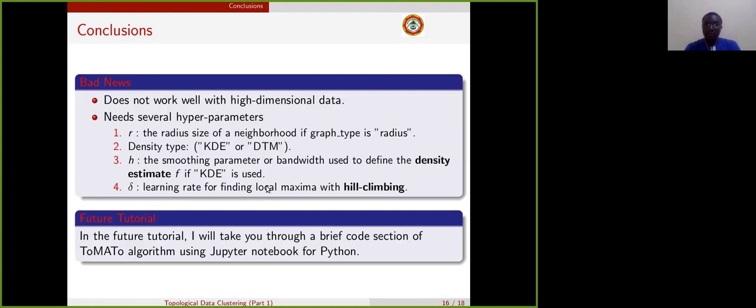So in conclusion, we can say that tomato is a very nice clustering algorithm because it has few downsides and it is very useful in recovering more complex clusters. And it automatically detects outliers and noise. In the future tutorial, I will take you through a brief code section of tomato using Jupyter Notebook for Python.